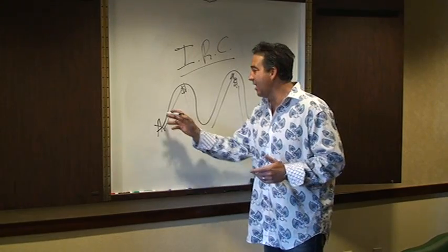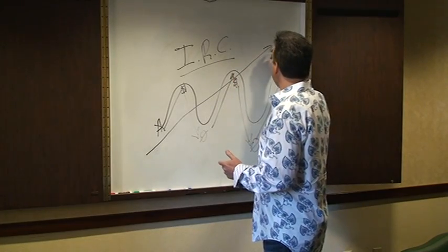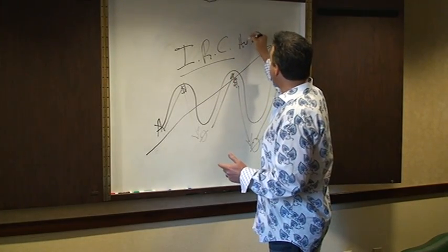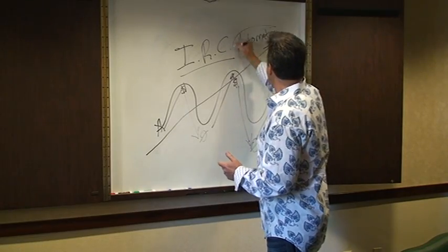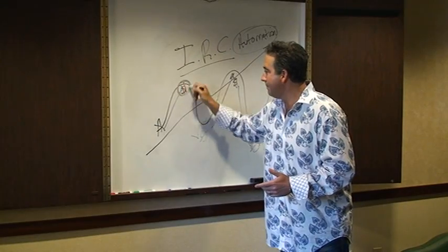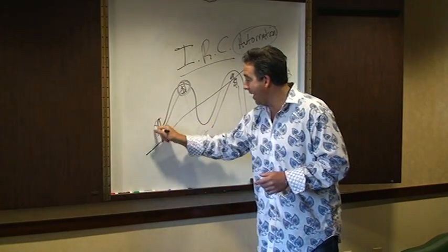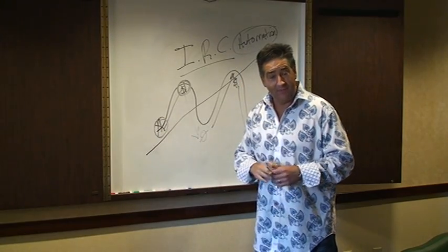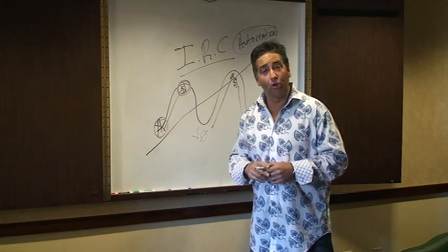But the key to getting off the income roller coaster so your income just gradually grows over time is through what we call automation. Automation means your marketing, the stuff that brings you money, runs all the time without you because the problem here is you. If it relies upon you, it's eventually going to fail.